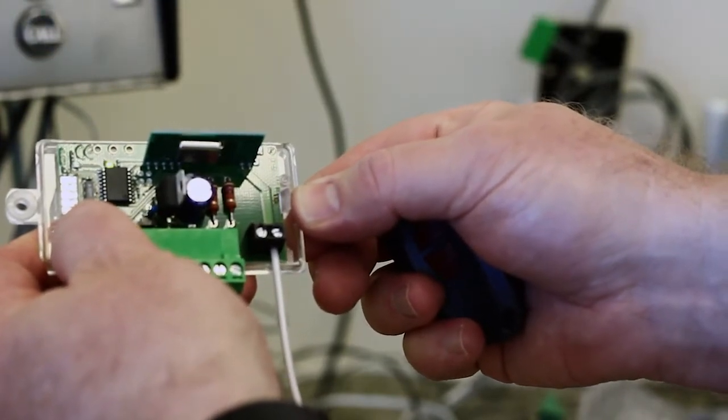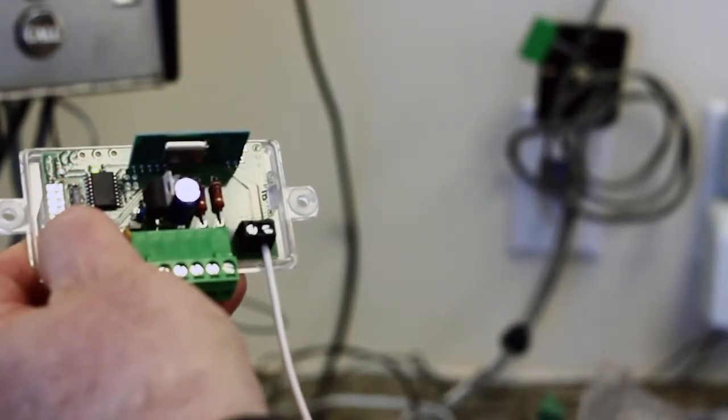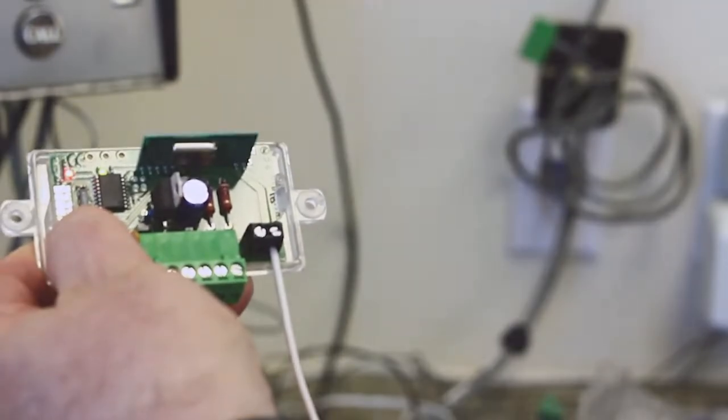To return the receiver to factory settings, hold the programming button until the LED turns on. Then press and hold the button again until the indicator blinks multiple times.